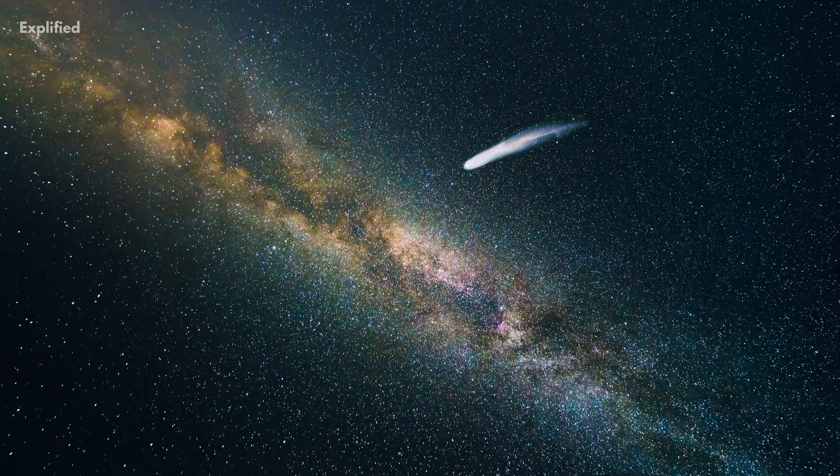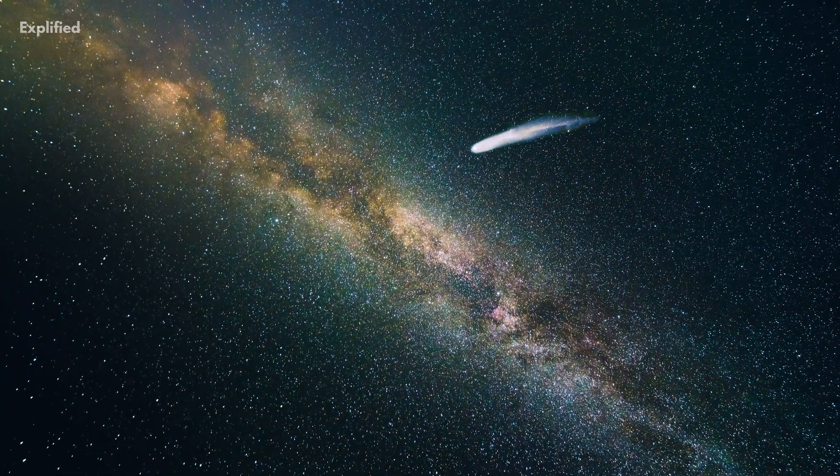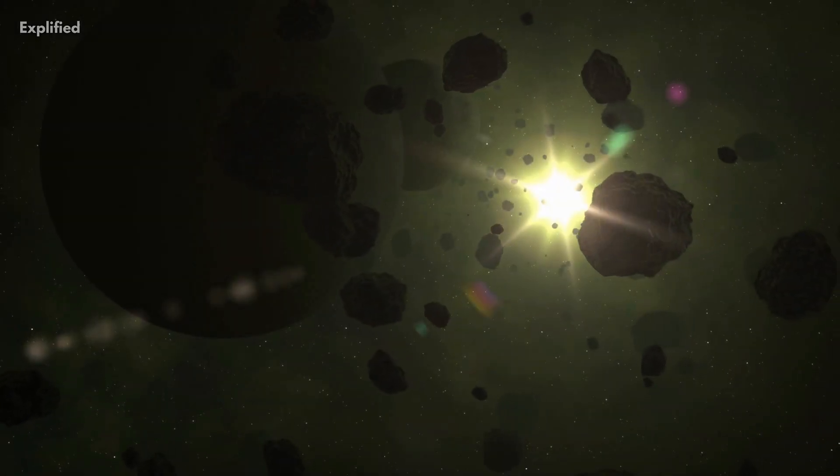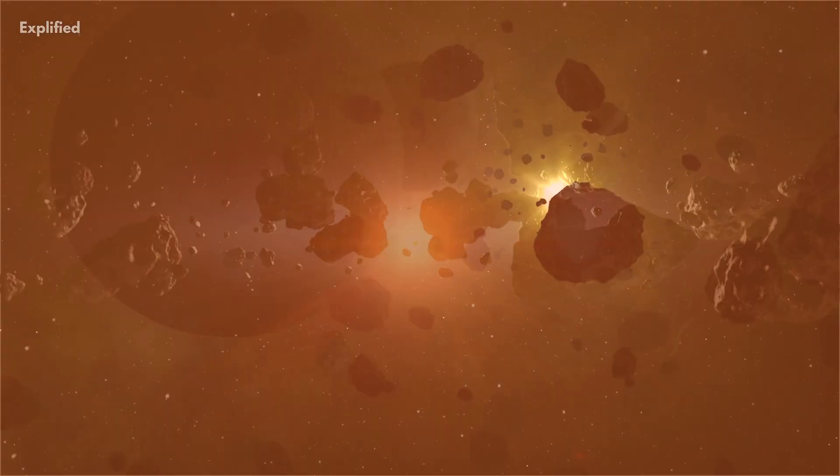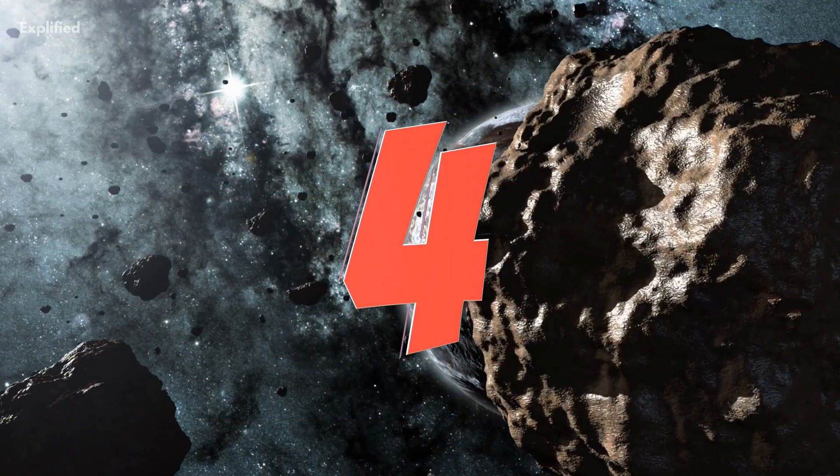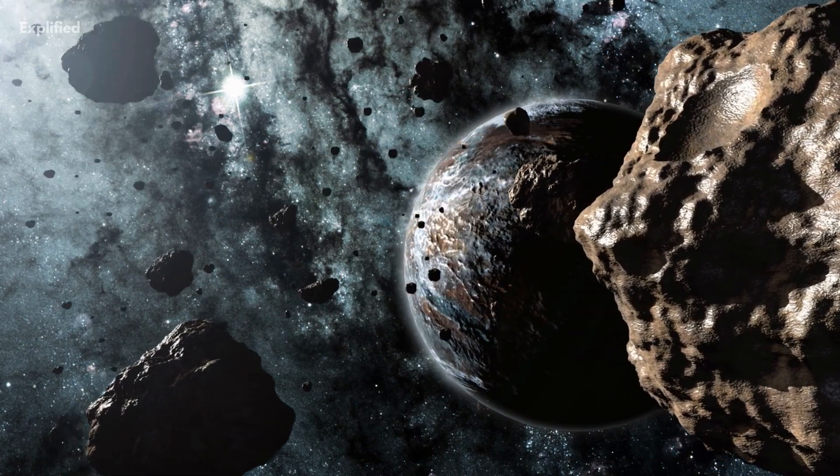The asteroid belt is a region of space found between the planets Mars and Jupiter. Most of the asteroids orbiting our Sun are found in this belt. It is described as torus-shaped. Four main objects make up almost half the entire mass of this belt.